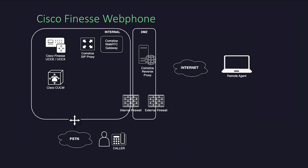When a customer call arrives and a Cisco Finest agent is selected by UCCX or UCCE, Call Manager sends the call to the agent's SIP extension, which is registered on the Comstis SIP proxy. The call is then sent to the WebRTC Gateway, where the signaling changes from SIP to WebRTC and HTTPS. When the call is established, there are two call legs: a SIP call leg from your voice gateway to the Comstis WebRTC Gateway, and then a WebRTC leg to the agent's browser session. Both the HTTPS signaling and the secure RTP audio stream of the WebRTC leg are encrypted.